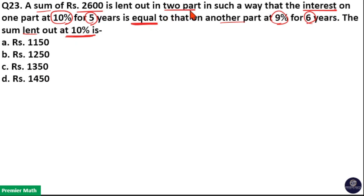Let us consider sum lent out in two parts as P1 and P2. Now interest on 5 years is equal to interest on 6 years. So 5 years interest is equal to 5 into 10%, that is equal to 50%, which is equal to 6 years interest, that is 6 into 9%, is equal to 54%.